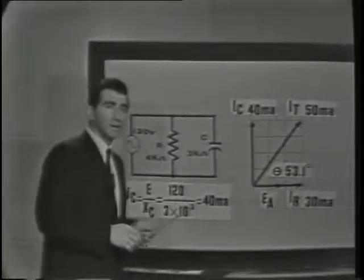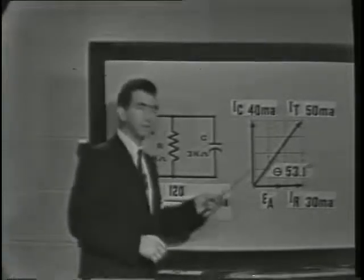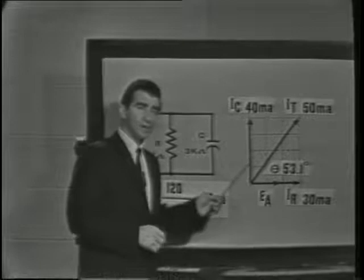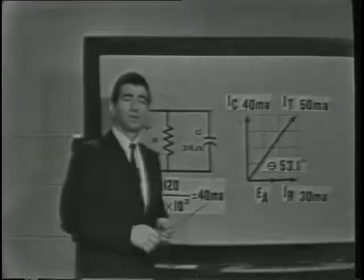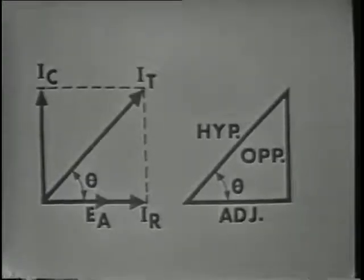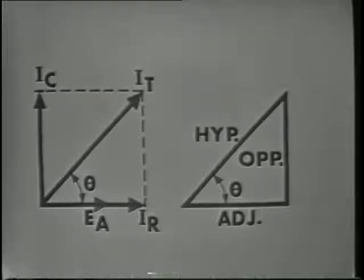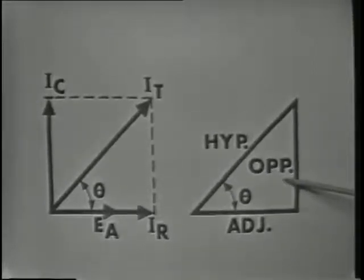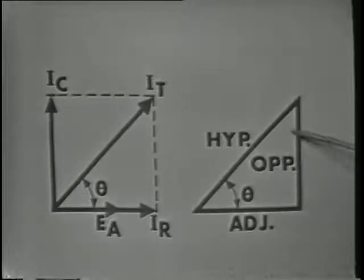The graphical solution is not very accurate and would become difficult to handle in a more complex circuit. The next portion of this lesson will point out a much more accurate and easier way to calculate the unknown factors in our circuit. We'll find the current in each branch as before and draw the vectors showing their values and phase relationships. Let's relate the vector representation to the familiar right triangle: IR is the same as the adjacent side, IC compares to the opposite side, and IT would equal the hypotenuse of the triangle.